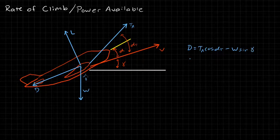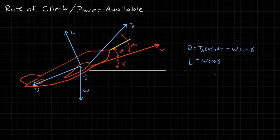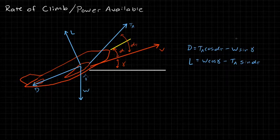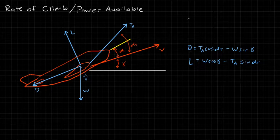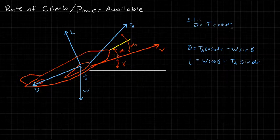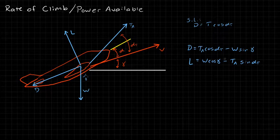Now let's do the lift. Our lift has to equal W·cos(γ), and we subtract off a component from thrust: thrust available times sin(α_t). One thing to point out is that what we have here is smaller than our steady level drag. In steady level flight, drag equals thrust times cos(α_t) — there wasn't this extra term. So this is for zero climb angle, and that's important to recognize.